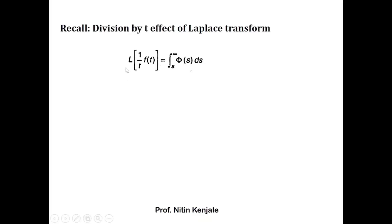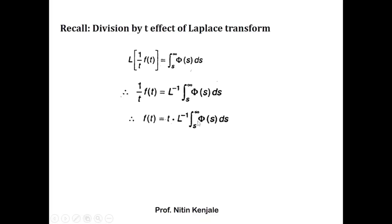First of all, we recall the division by t property of Laplace transform. We know that Laplace of f(t) upon t is given by the integral of φ(s) ds over the limit s to infinity, where φ(s) is the Laplace transform of f(t). Taking L to the other side, the right hand side becomes L inverse of the integral of φ(s) ds.